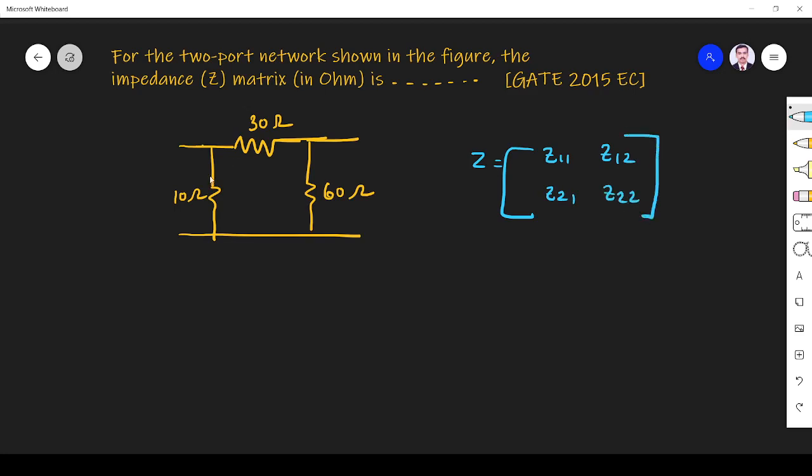They have given a pi network. Whenever they give a pi network and ask for two-port parameters, whenever they ask about Z matrix, we have to convert the pi network into a T network. It will make our problem solving very simple. So I convert pi into T. How can we convert pi into T?